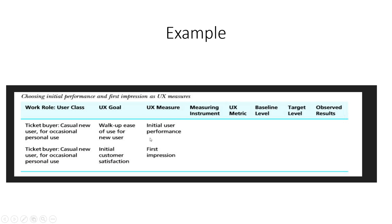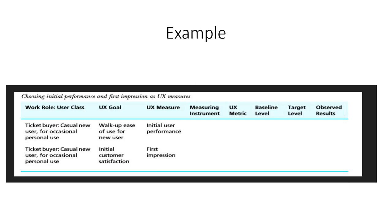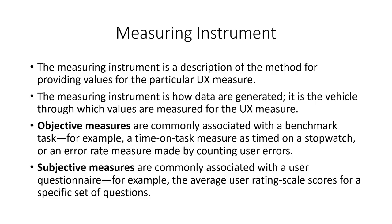Since initial performance is objective, we are going to use some kind of task for measuring it. When we say first impression, it is subjective, so we are going to use some kind of questionnaires for measuring it. The goal refers to the ability of a typical occasional user to do at least the basic tasks on the first try without using any training or manual.